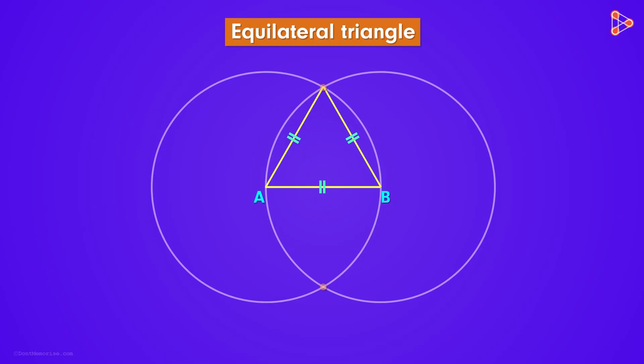We will get an equilateral triangle even if we join points A and B to this point here. Wasn't it interesting? Such knowledge of geometry was known to people from ancient times.